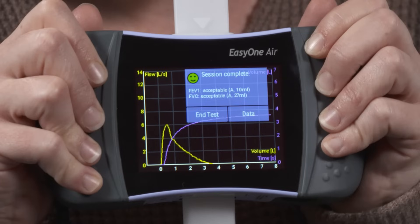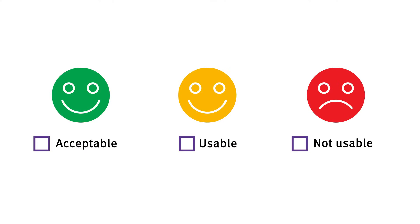During the test, the FVC and the FEV1 parameters are looked at separately and then determined to be acceptable, usable, or not usable. You can click on the stoplight smileys for a detailed look at each part of the trial.